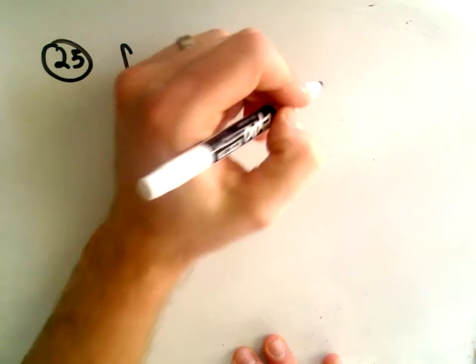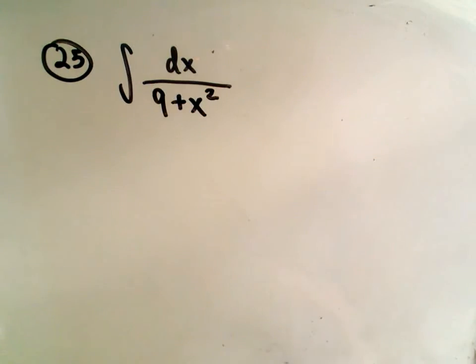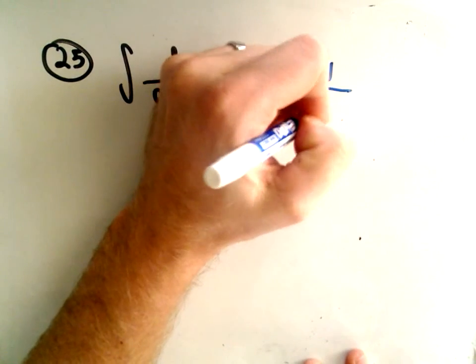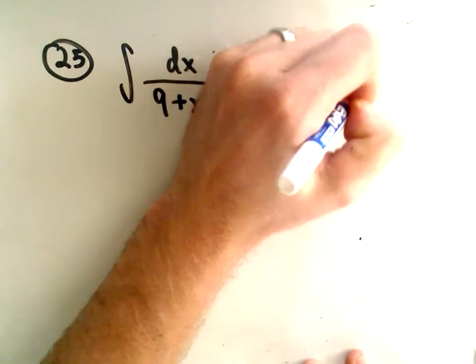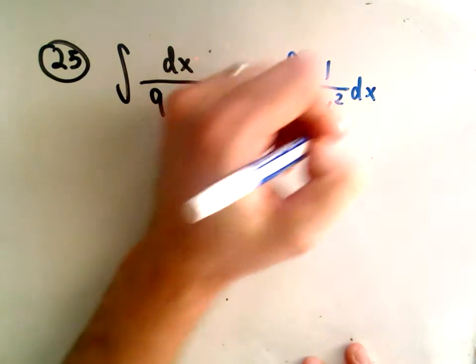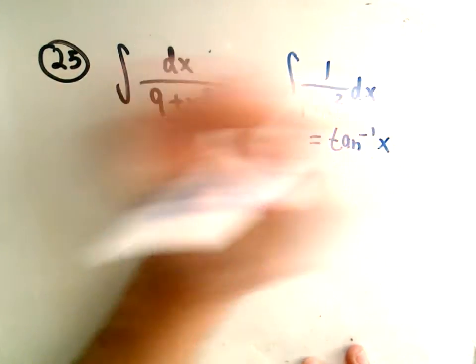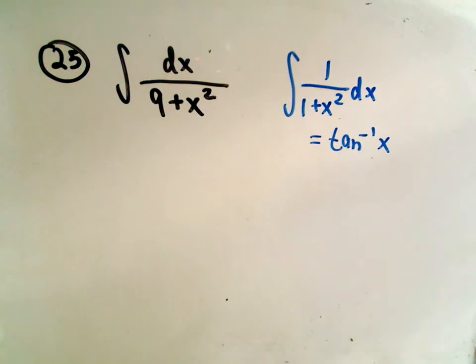And the thing that you need to remember basically is the formula you need to remember is that the integral of 1 over 1 plus x squared dx, recall that this equals arctangent of x plus c. So certainly that's going to be important and that's what we're using here.